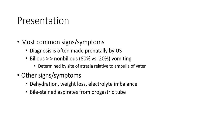The most common signs and symptoms: diagnosis is often made prenatally. Bilious vomiting occurs in 80% of cases versus non-bilious in 20%, depending on the location of atresia relative to the ampulla of Vater. Other signs and symptoms include dehydration, weight loss, electrolyte imbalance, and bilious aspirates from nasogastric tube.